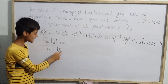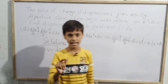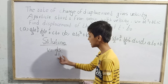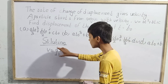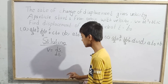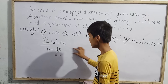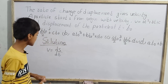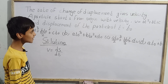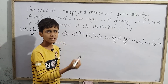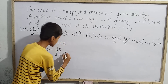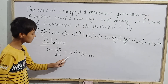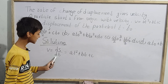So ds/dt operates over displacement s. If s is given and we have to find v, we differentiate s with respect to t. Whatever value of s is given, write d(s)/dt and differentiate — that gives velocity. Now velocity ds/dt is already given as at² + bt + c, which implies ds/dt = at² + bt + c.